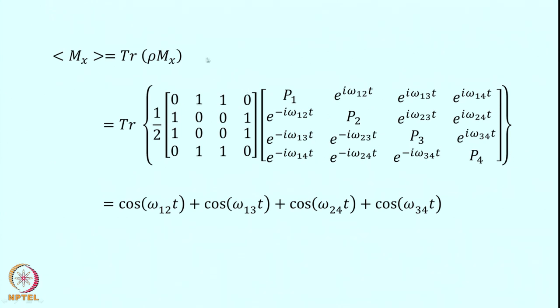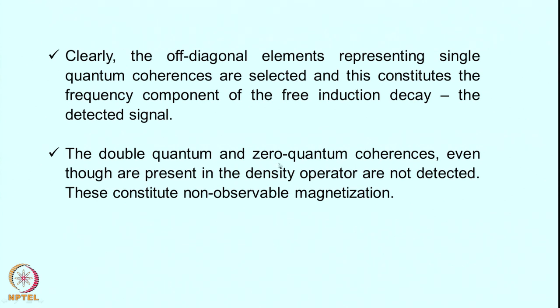The populations are not measurable magnetization because mx is the magnetization in the transverse plane, the x-component of the magnetization. Populations therefore cannot contribute to the measurable magnetization. Interestingly, double quantum and zero quantum coherences, even though present in the density operator, are not detected — these constitute non-observable magnetization. To observe these, you have to convert them into observable magnetization by some tricks, which one does in multiple quantum experiments.